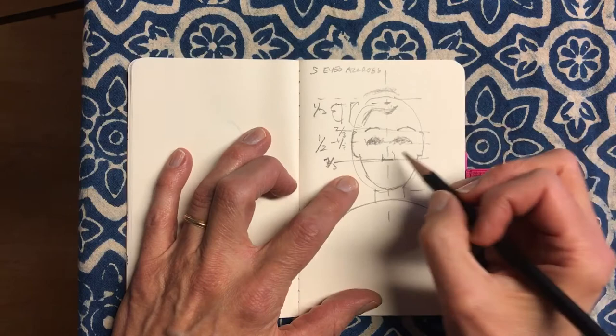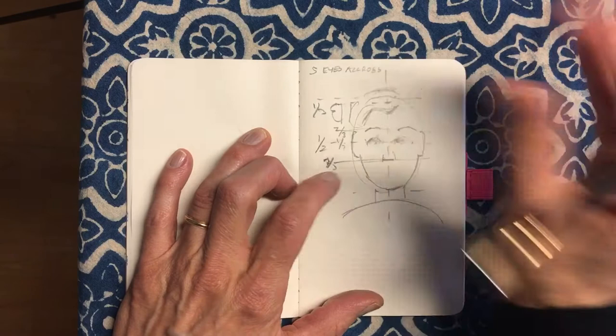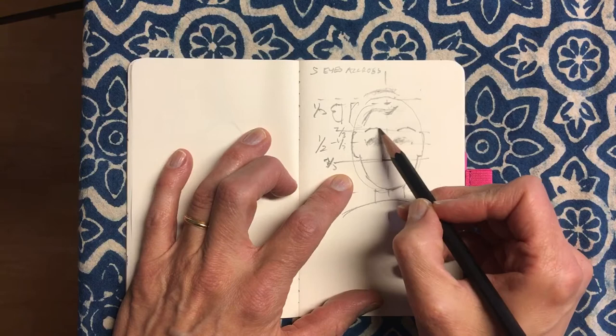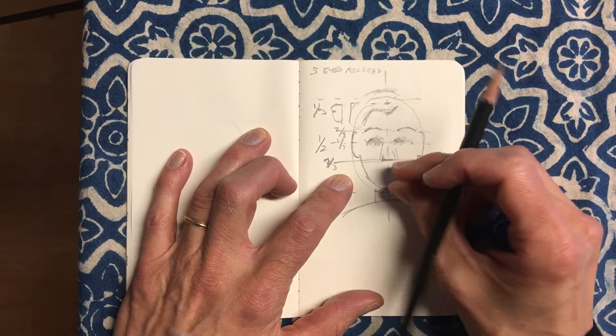So we've got our eyes about, and I'm gonna erase them out because I don't want them to be too specific, but just that our eyes are gonna fill up the space in there. And eyebrows, we've got a hairline, putting the nose in there.